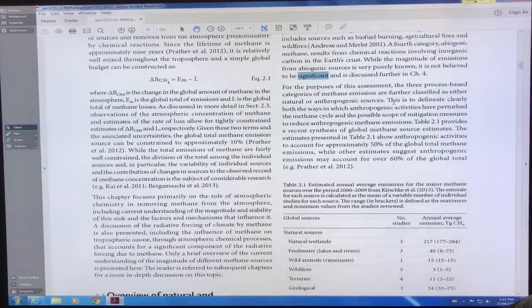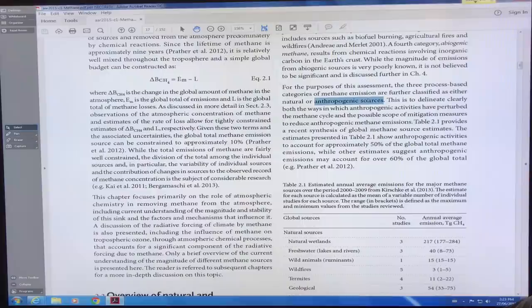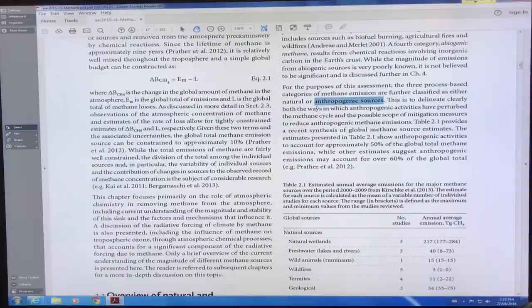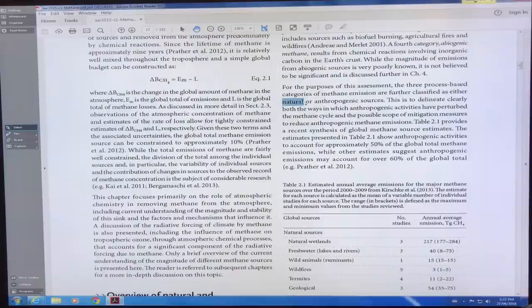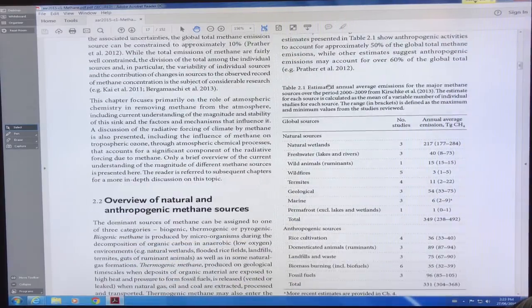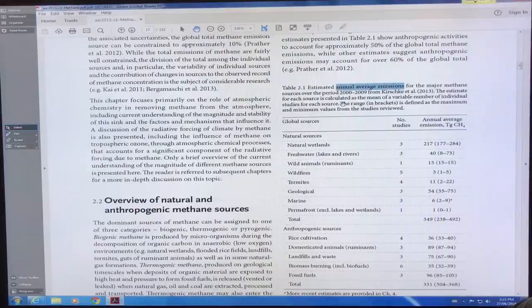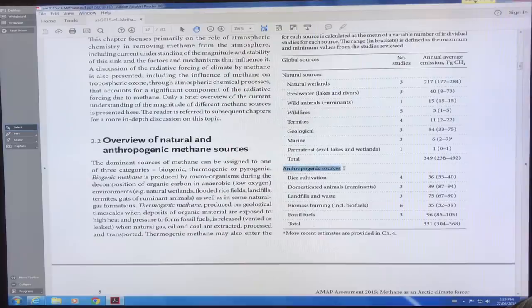So the other key thing is we have to classify methane as either natural or anthropogenic. Anthropogenic is human caused, human released versus natural. Now humans are changing the natural emissions, right? By changing the temperature, by changing the hydrology, we're changing the natural emissions. So there's a big anthropogenic component also in natural. Now these are the average estimated annual average emissions for the major methane sources from 2000 to 2009. So we've got natural sources here and we've got anthropogenic sources here.